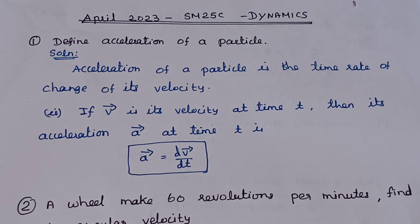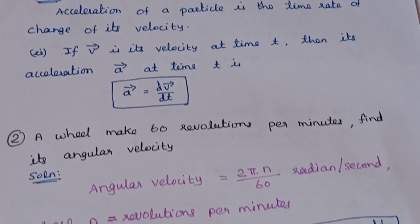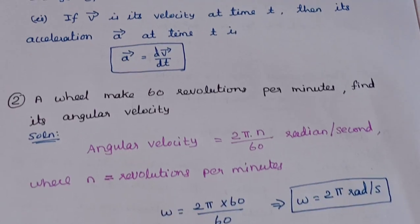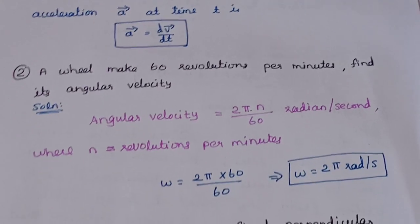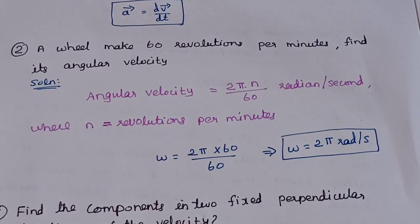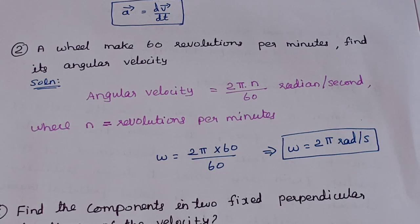Velocity is the time rate of change of displacement. This is the two-mark question: a wheel makes 60 revolutions per minute. Find its angular velocity.